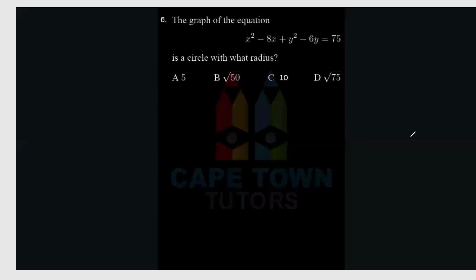The next question: the graph of the equation x squared minus 8x plus y squared minus 6y equals 75 is a circle with what radius? To find the radius of the circle, we have to express the equation in standard form.